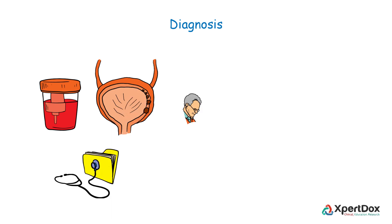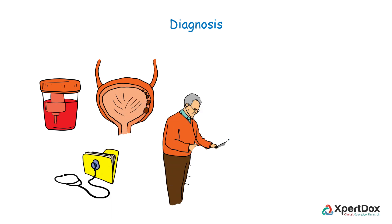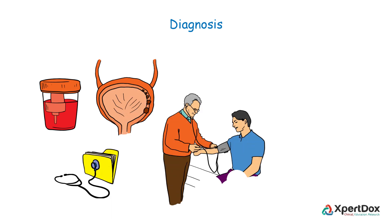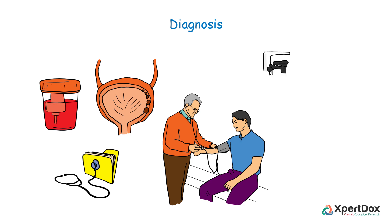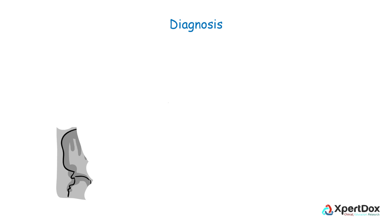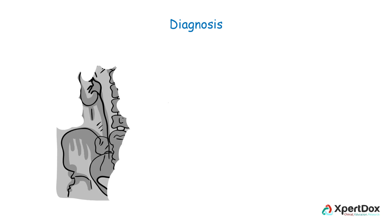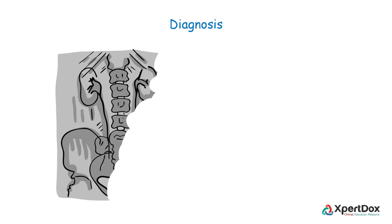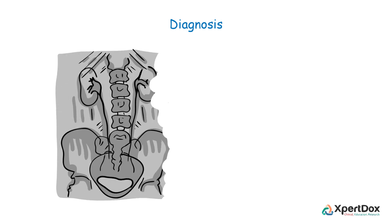Physical exam and history make a necessary part of the workup. A sample of urine is checked for abnormal cells and its content. Medical imaging of the kidneys, ureters, and bladder helps find out any abnormal areas.